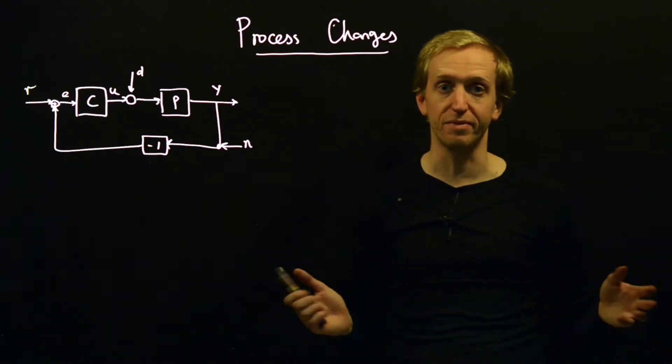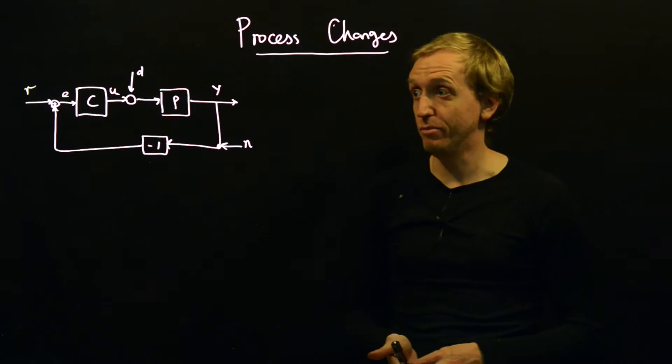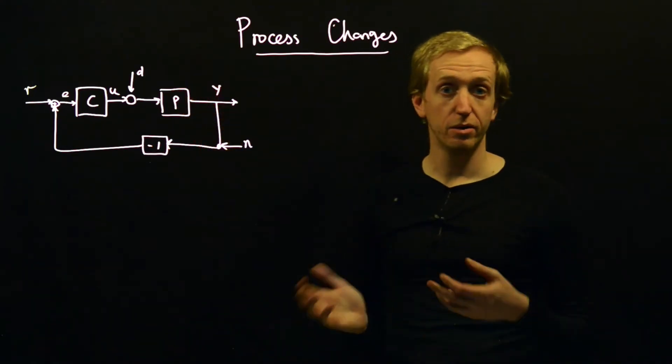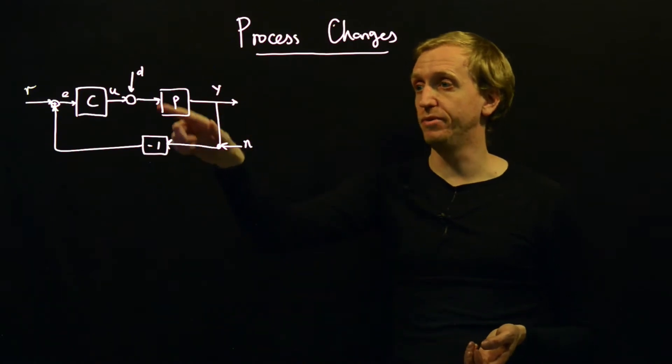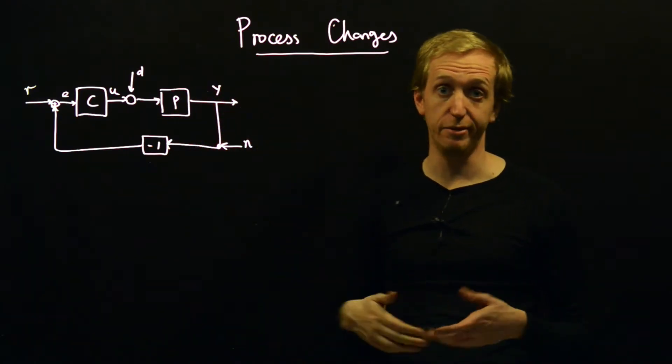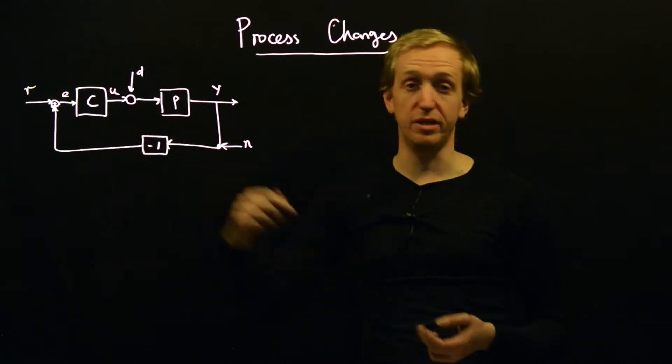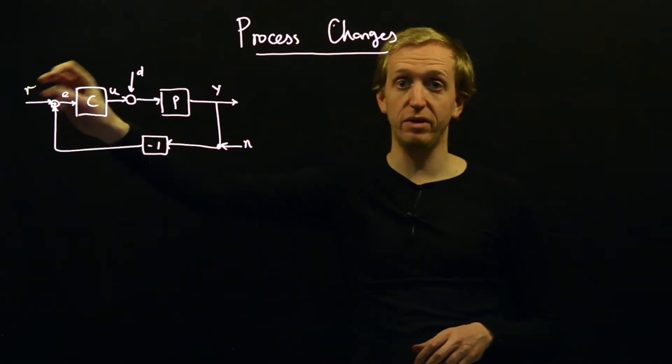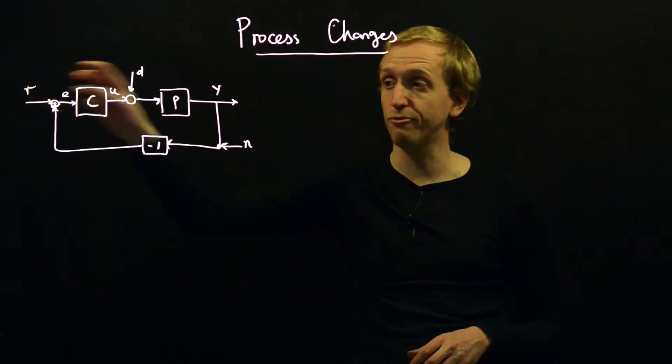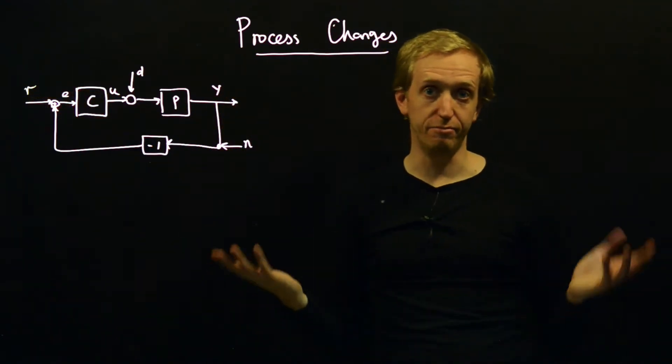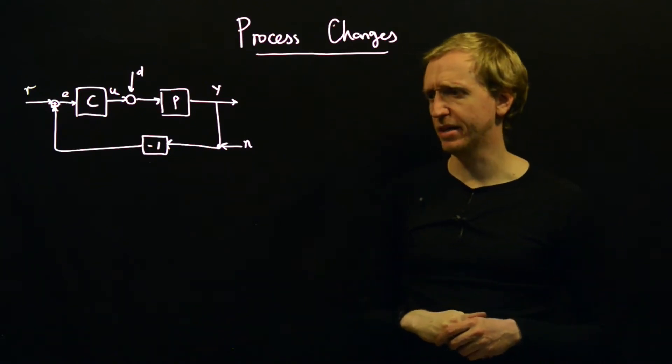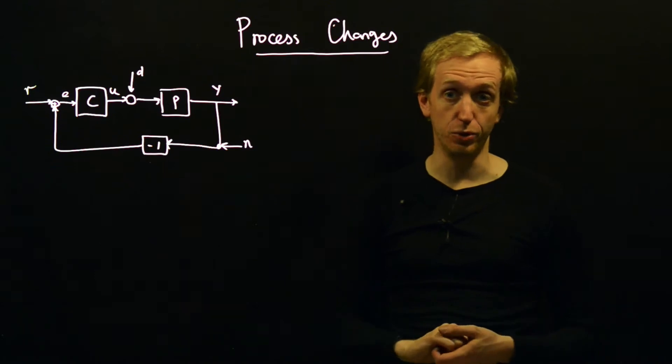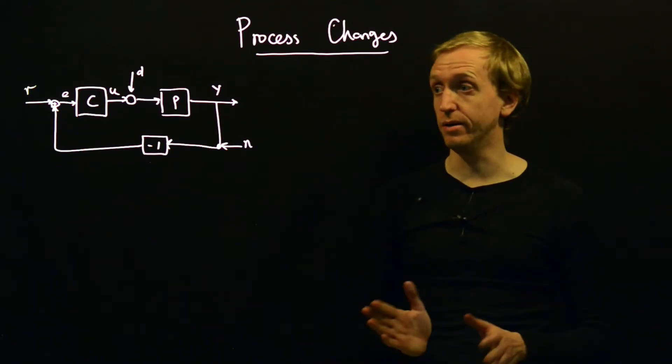It's sort of one of the miracles of feedback that you can make this work. So despite the fact that you maybe only have a very crude understanding of the true input-output behavior of your process, still, through introducing feedback, it's possible to get very predictable behavior from some desired references to the outputs that you're interested in. We're going to try to understand this and introduce a few tools for quantifying this now.